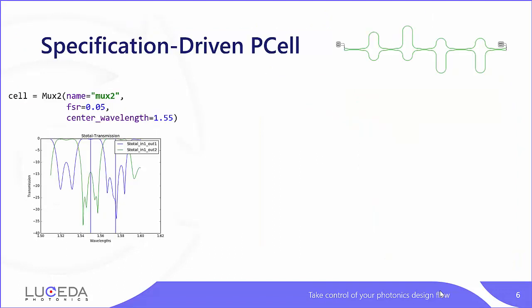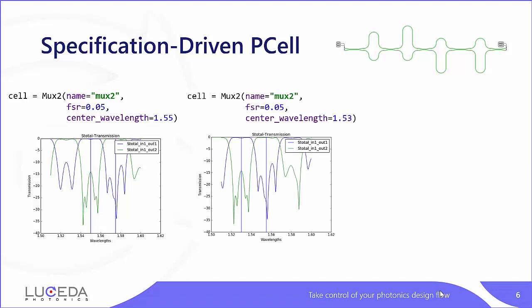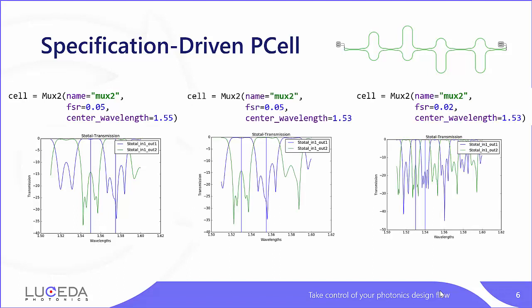Let's take a look at how this specification-driven MZI lattice P-cell works. When we instantiate an MZI lattice, all we need to provide is the FSR and the center wavelength value. IPCIS users may already know the P-cell concept. The lattice filter cell is also a P-cell where users can tune the optical behavior parameters, and the software evaluates and synthesizes the design. These graphs show how changing FSR or center wavelength values automatically generates a new design with various spectral responses.